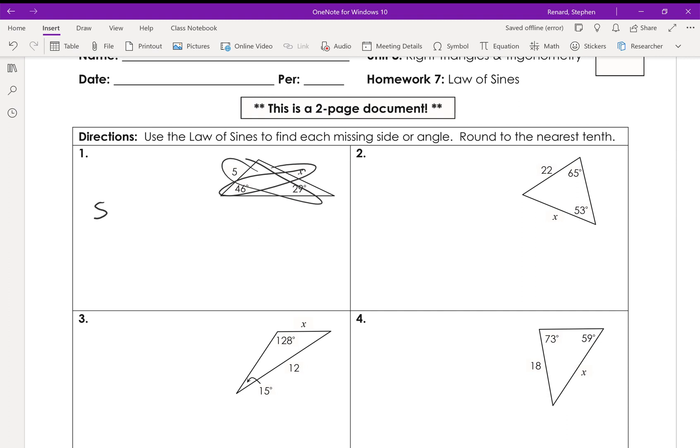So, we have sine of 29 over 5 equals the sine of 46 over x. So, like any good proportion, we're going to use the cross product property of proportions. And then we're going to divide both sides by the sine of 29.